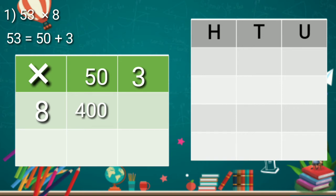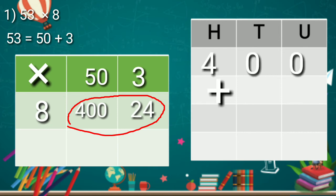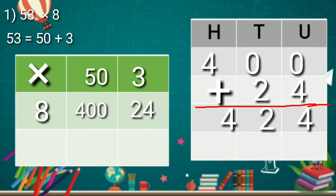Now, we multiply 3 by 8. We get 24. Now, let's add this two numbers. Then, we will get the answer. And our answer is 424.